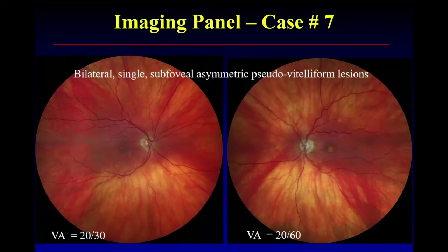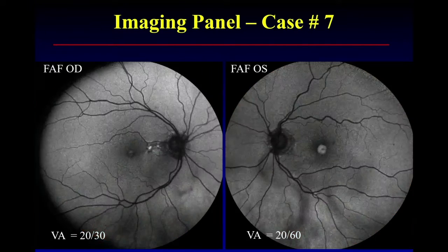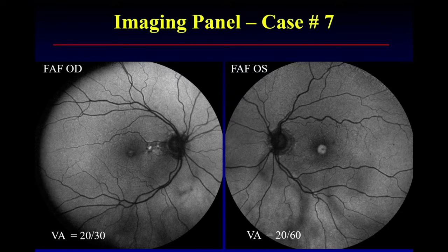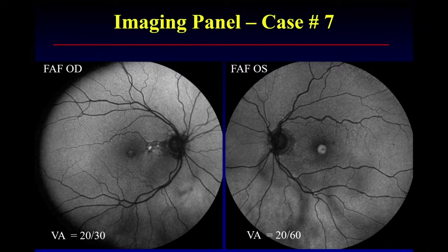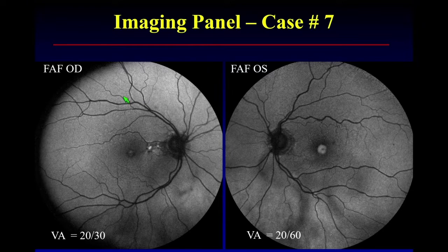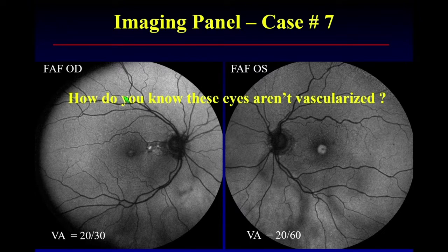Any additional testing to confirm that diagnosis? Autofluorescence. Fundus photographs — always helpful. Autofluorescence — there it is. What are the characteristics that tell you this is pattern dystrophy and not Best's disease? Can you tell just from the testing? Do we need EOGs? Do we need genetics? EOG would be helpful if you want to prove Best's. Well, it's an imaging conference, so you don't get an EOG.